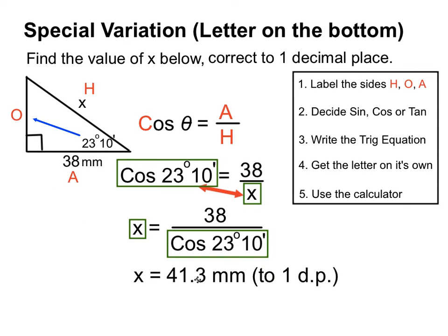We were expecting a number larger than 38 millimetres since x is on the hypotenuse, which should be the longest side — 41.3 checks out. Anytime you see the letter on the bottom, do that swapping routine: it sets up a divide-by scenario. We follow the sine, cos and tan arrangements precisely — the letter goes on the bottom because it was on the hypotenuse, and that's when we apply this variation.